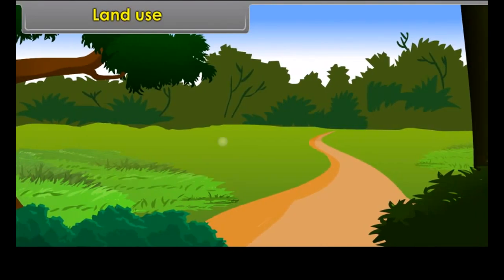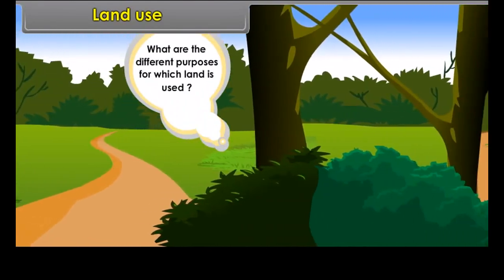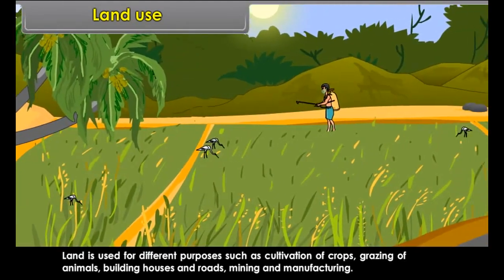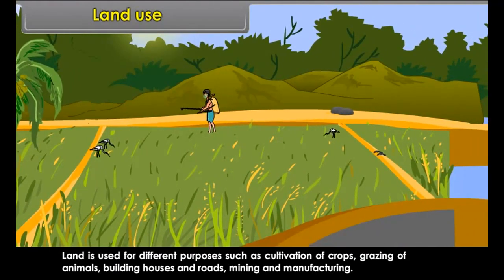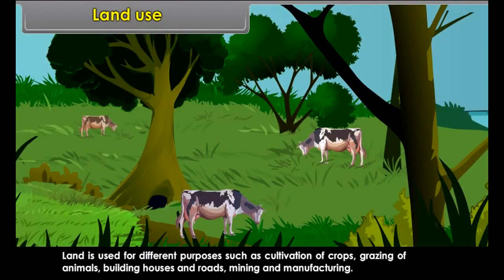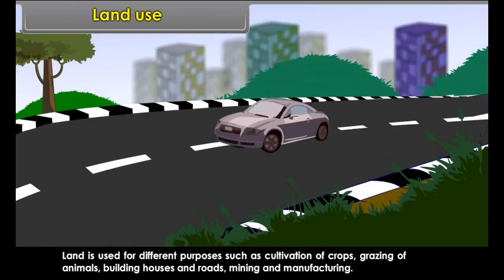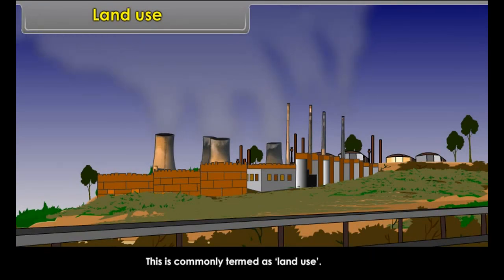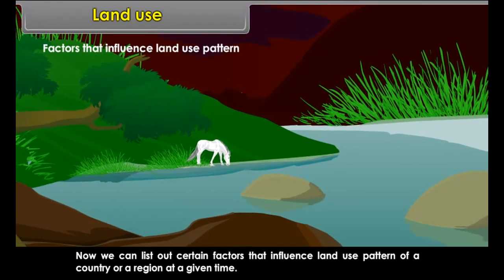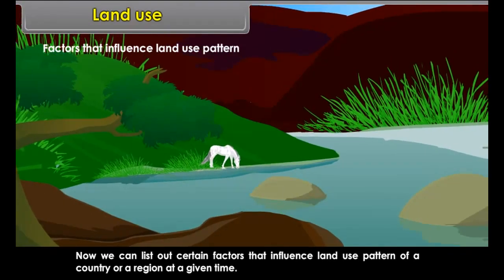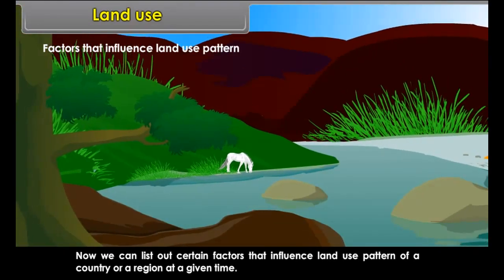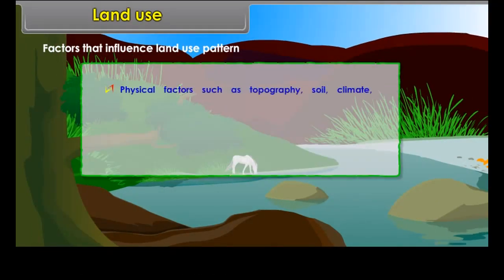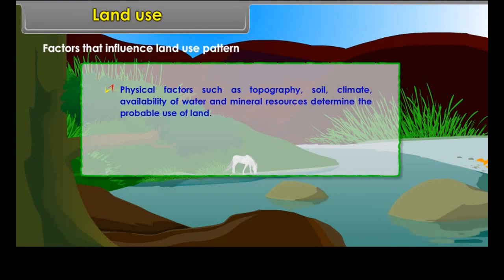Land Use. Land is used for different purposes such as cultivation of crops, grazing of animals, building houses and roads, mining and manufacturing — this is commonly termed as land use. Factors that influence land use pattern include physical factors such as topography, soil, climate, availability of water and mineral resources, which determine the probable use of land.